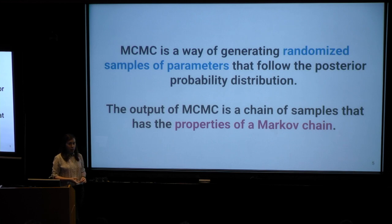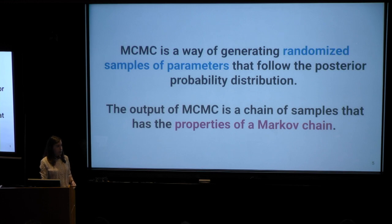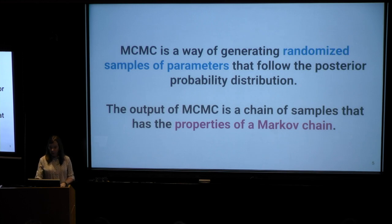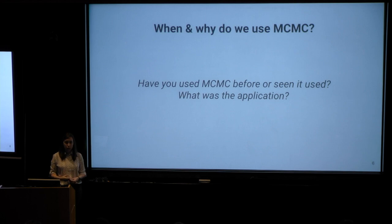Specifically in this context, the numbers we want to generate are going to be samples of parameters from a posterior distribution. MCMC is really widely used in astronomy and in the sciences in general because it's a powerful way of generating these randomized sequences of samples from the posterior distribution. To start off with a discussion question: please turn to your neighbor and talk about whether you have ever used MCMC yourself or seen it used, and what was the scientific application?